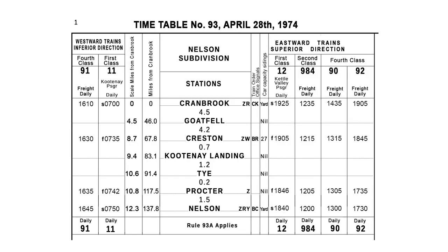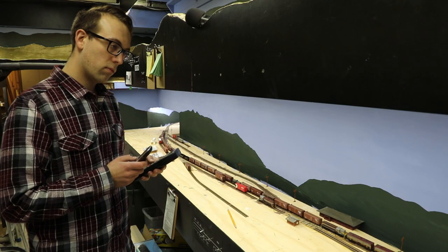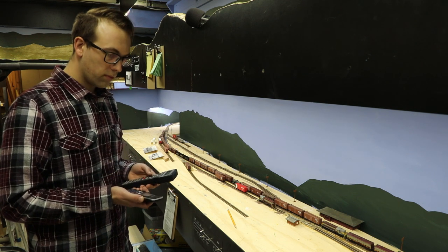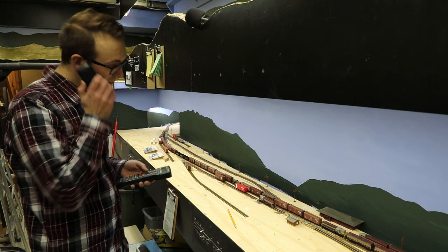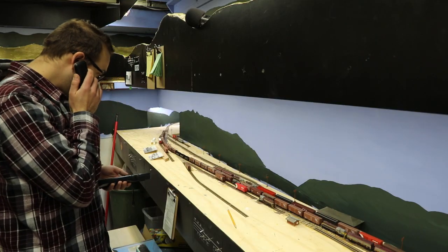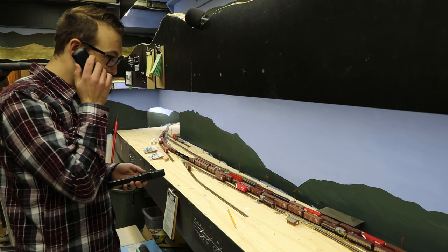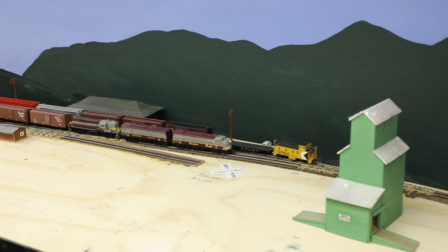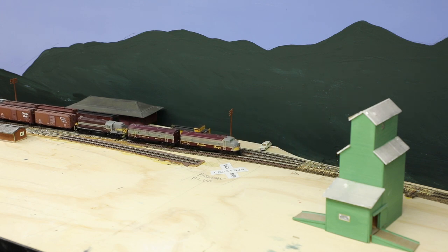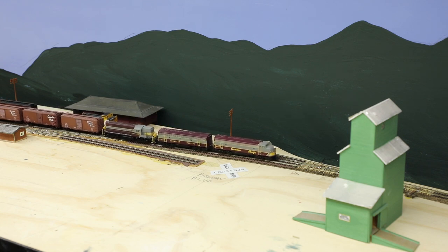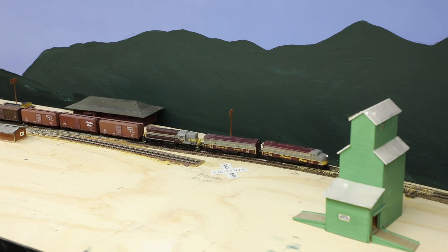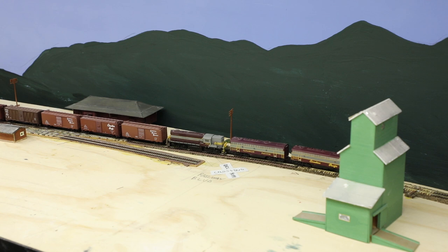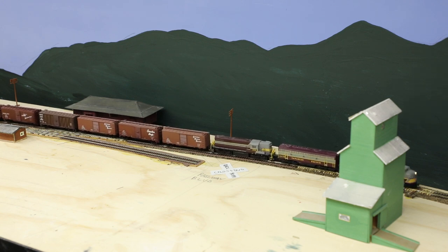Looks like there's a meet ahead — two extras, the same class. The timetable shows that westward trains are inferior by direction, so we would normally take the siding. However, the order confers right over the eastward train, so we shall take the main. Train 90 is a couple of minutes late going by, but calls into the dispatcher without stopping to OS through. — OS, Creston. — Go ahead, Creston. — Number 90 is through at 13:18 PM. — Number 90 is through at 13:18. 4072 is on its way as well and will OS out. — Extra 4072 West is out at 13:20 PM.